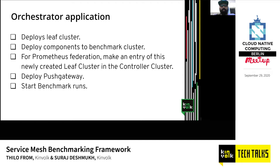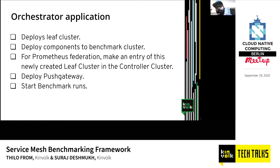Every job is backed by this orchestrator application. It runs Kubernetes jobs that deploy leaf clusters, then deploy external DNS, Prometheus, Grafana, and everything — except for Istio and Linkerd, because we do that later when we start the benchmark runs. Since these jobs are running on the controller cluster, this is where the registering part happens: this is where the root Prometheus learns about the child Prometheus instances, and how root Prometheus scrapes from the children. During the benchmark runs, we also deploy a push gateway before starting benchmark runs.